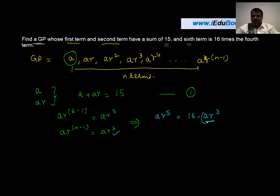We get ar⁵ divided by ar³ is equal to 16. This a cancels, this r³ will make it r², so r² equals 16, which gives you that r is equal to square root of 16, which is plus or minus 4.